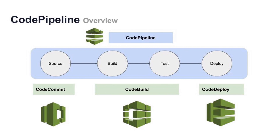It helps you model and configure the different stages of the software release process. There are multiple stages that come under the CodePipeline. The first thing we have in the CodePipeline is the source, which is CodeCommit in AWS. CodeCommit provides us the source and version control for our code.